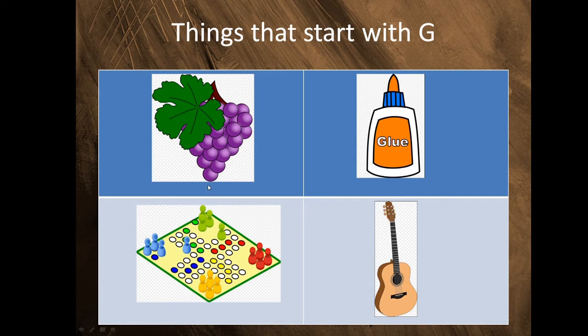These are grapes. This is glue. This is a game. Guitar. They all start with G. They all make a G sound. Can you say them with me? Grapes. Glue. Game. Guitar.